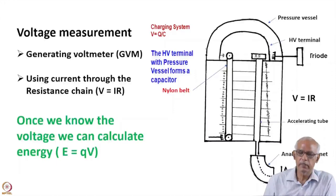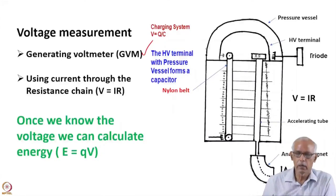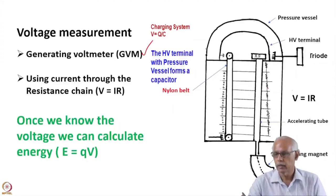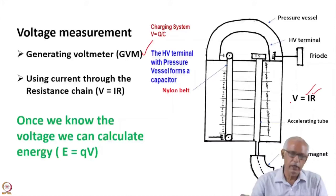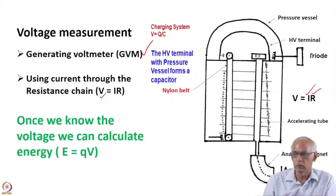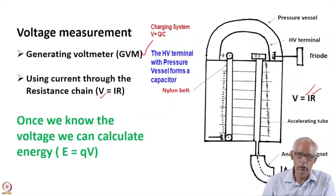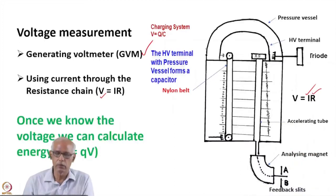Voltage measurement is done with the generating voltmeter (GVM). Another method uses current through a resistor chain: the voltage gradient is established through a resistor chain, and if the total resistance is R and I is the current, the voltage can be calculated as V = IR. The accuracy of this voltage depends on how accurate the resistances are — normally resistance accuracy is 5 to 10 percent, so there will be an error of that order. Therefore very good quality resistances are needed for accurate voltages.